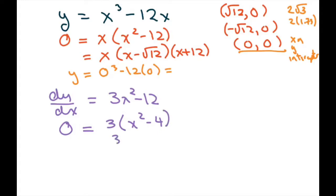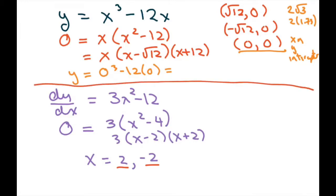So this one's like x minus 2 times x plus 2. So we do have critical points at x equals 2 and negative 2. Now we're going to plug in 2 and negative 2 to find the y-coordinates of the critical points.